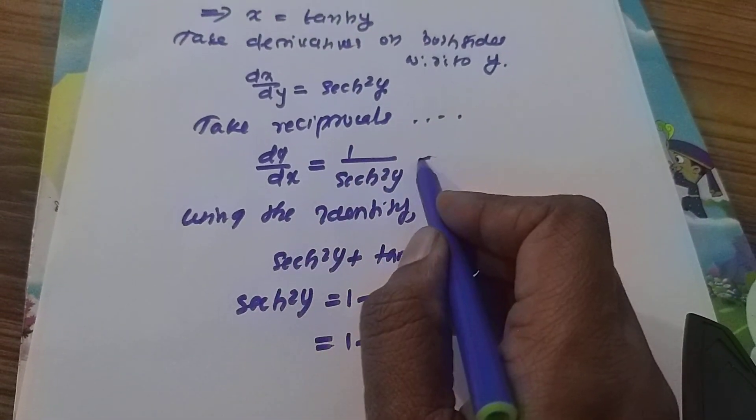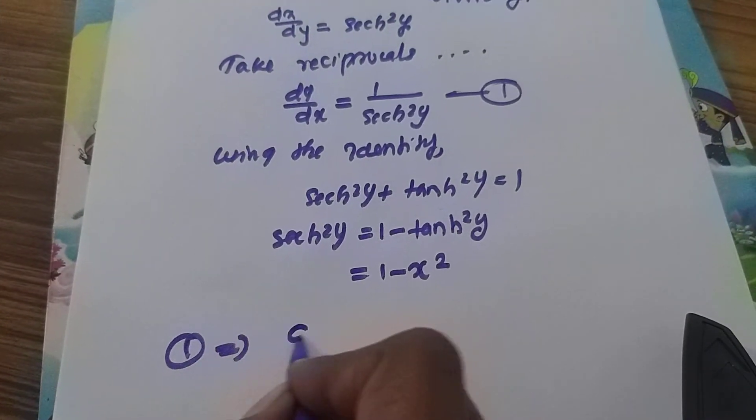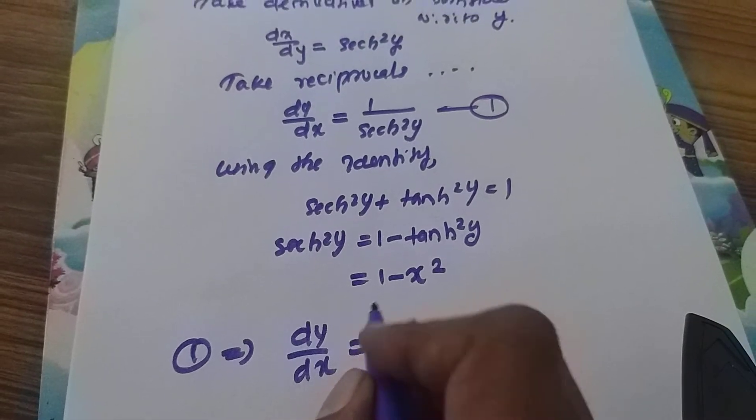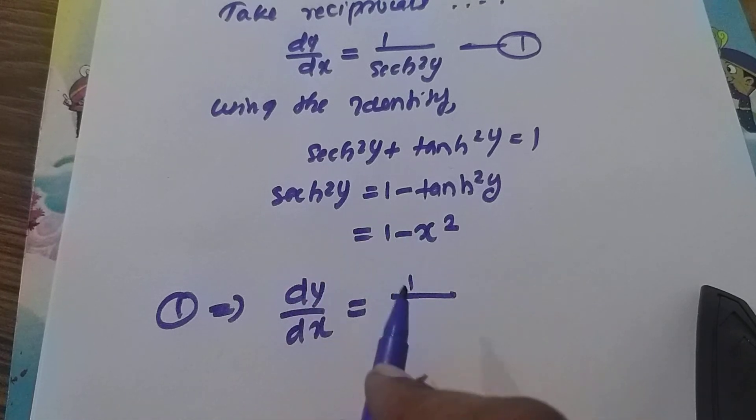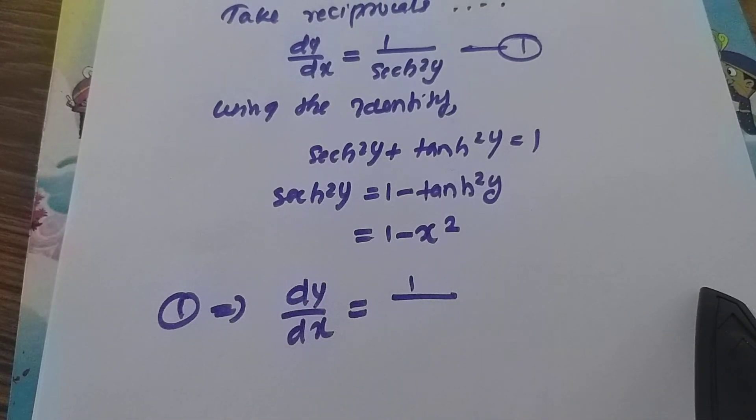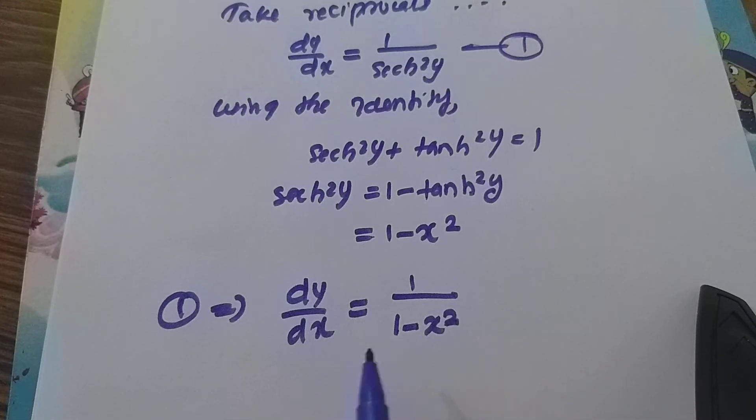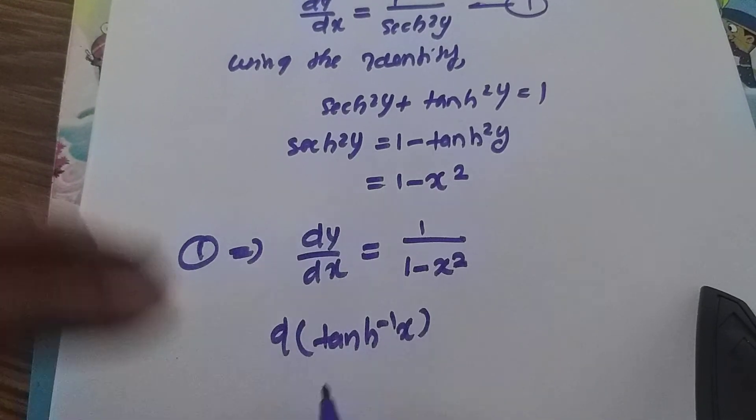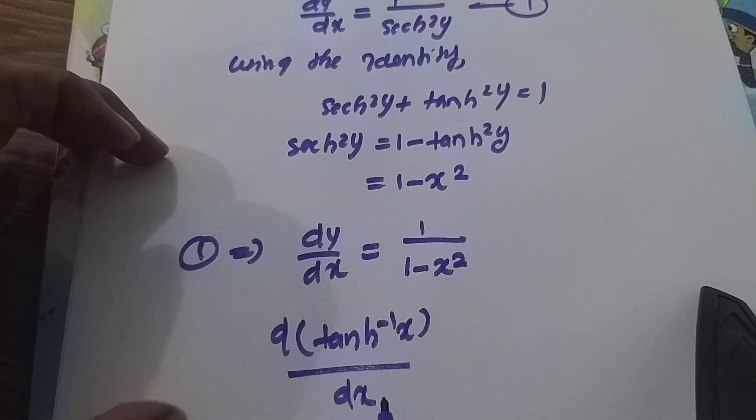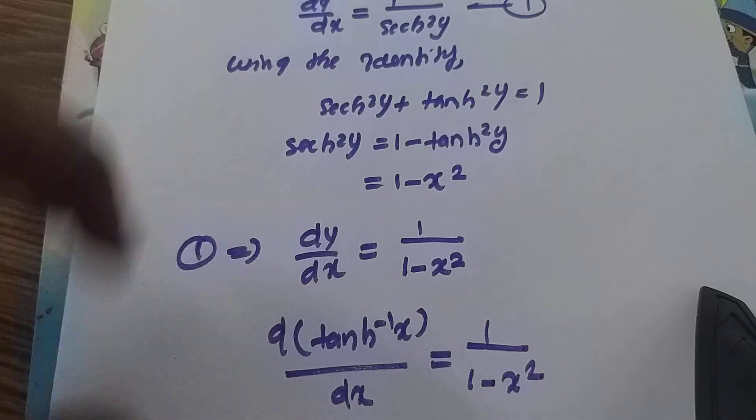Therefore, dy/dx equals 1 over (1 minus x squared). Proof is completed.